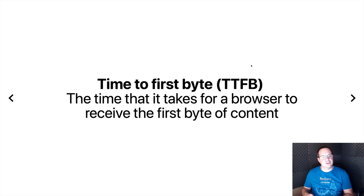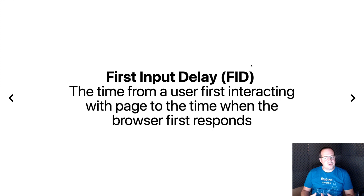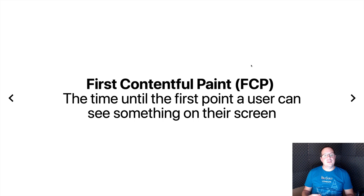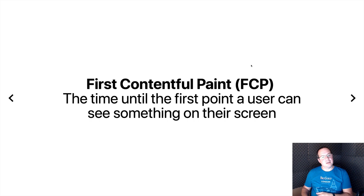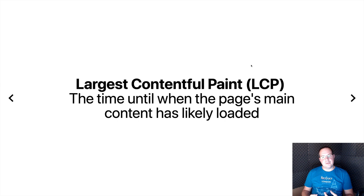The next metric is first input delay — the time from the user interacting with your page in their browser to the time the browser is first able to respond. We then have first contentful paint — the time it takes from the user starting to load your page to when they can finally see something on their screen. This goes back to the idea that the user will perceive your website as faster if they see content sooner. The next one is largest contentful paint, very similar to first contentful paint but more focused on the main content being loaded, which helps that perceived performance of your page.